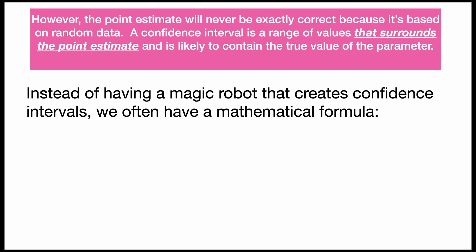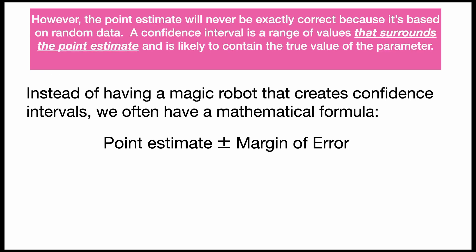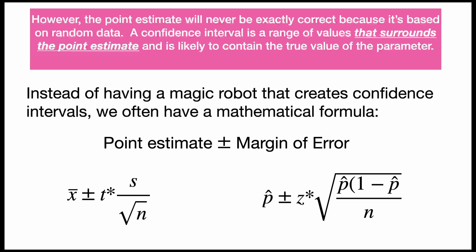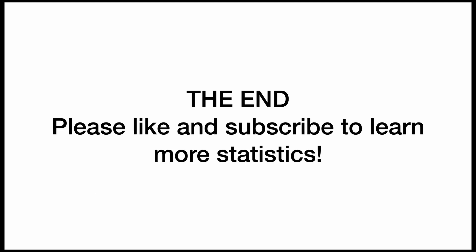A confidence interval is a range of values that surrounds the point estimate and is likely to contain the true value of the parameter. Instead of having a magic robot that creates confidence intervals, we often have a mathematical formula, like the point estimate plus or minus the margin of error. Here is the formula to make a confidence interval for a mean, and here is the formula to make a confidence interval for a proportion. Thanks for watching — please like and subscribe to learn more statistics.